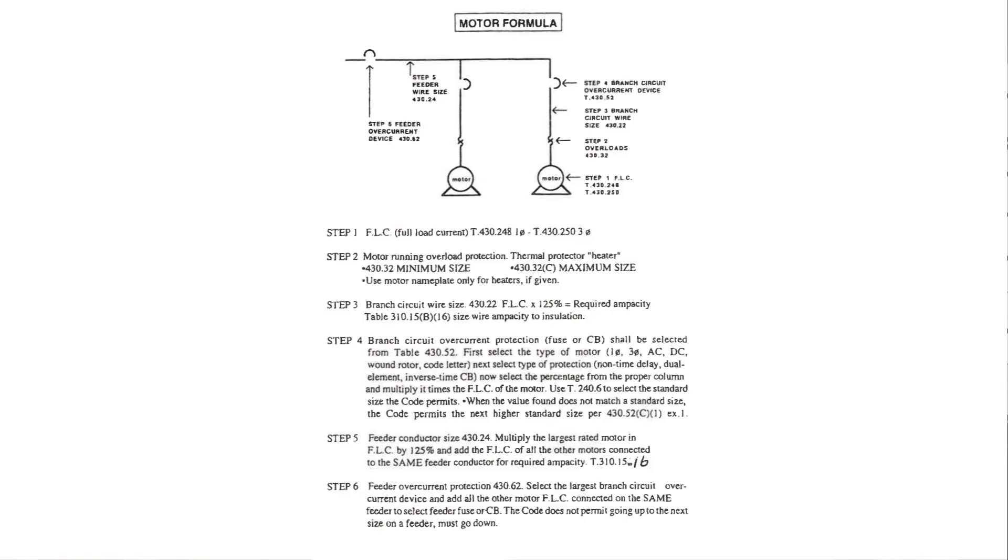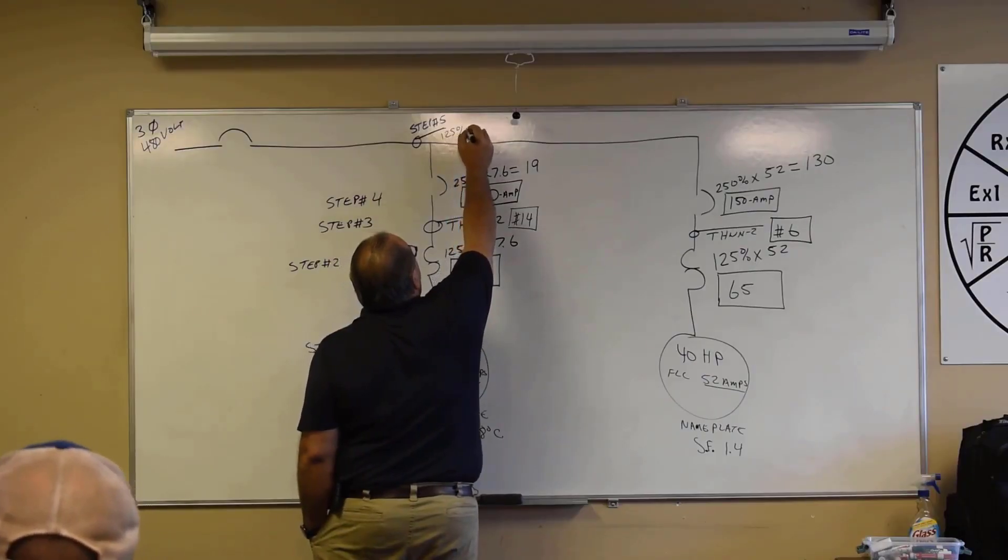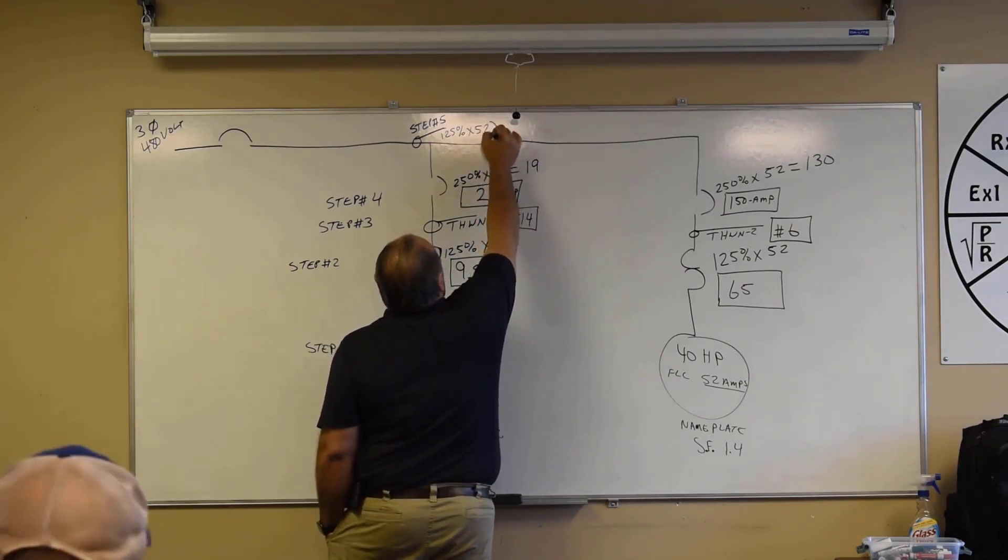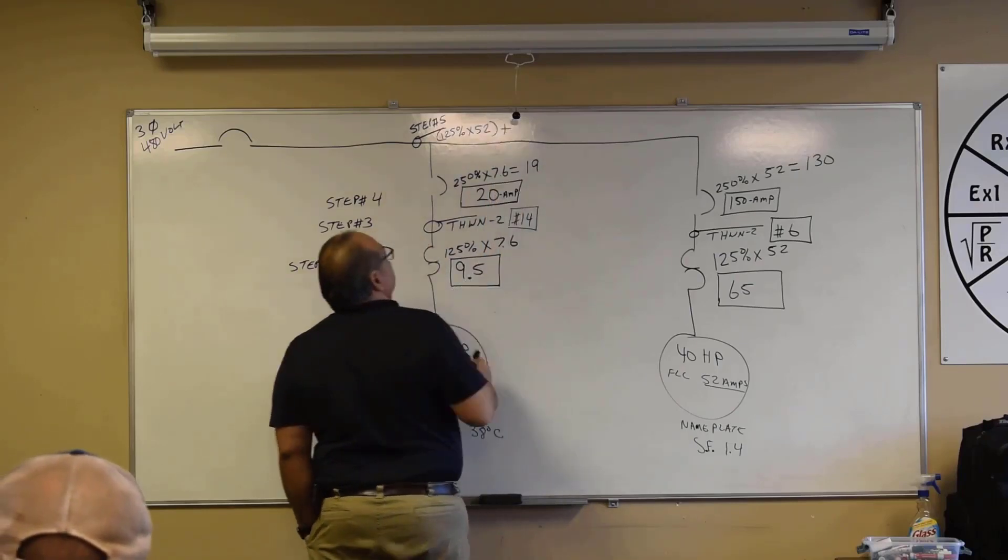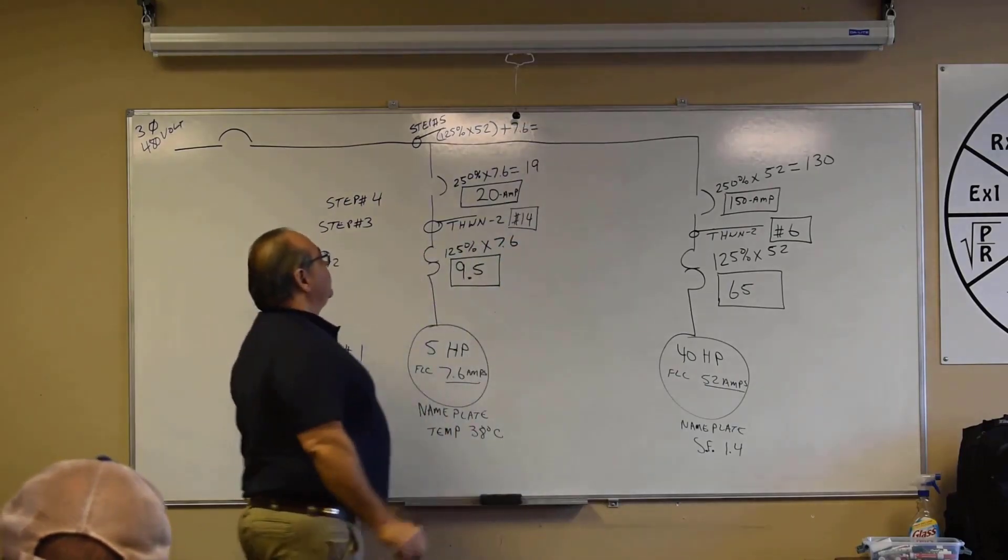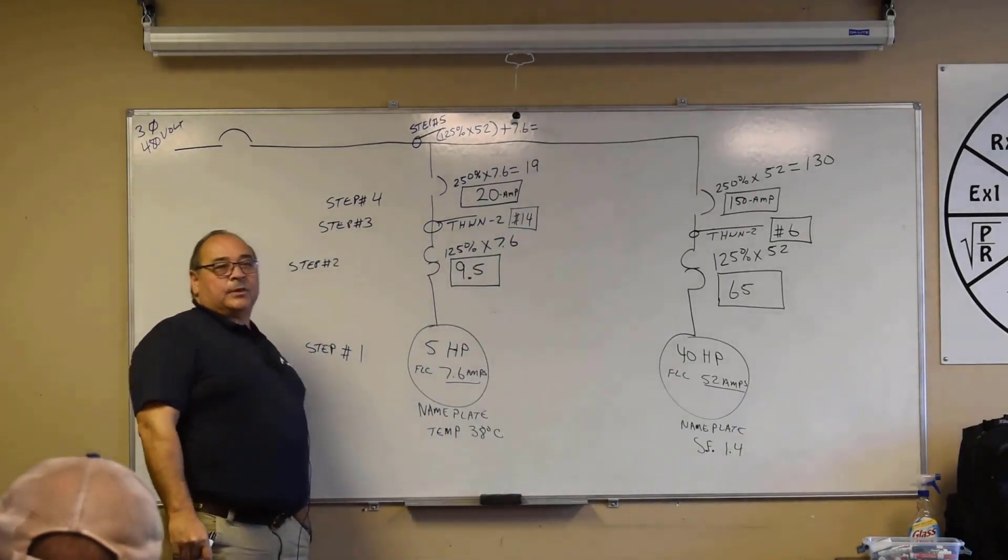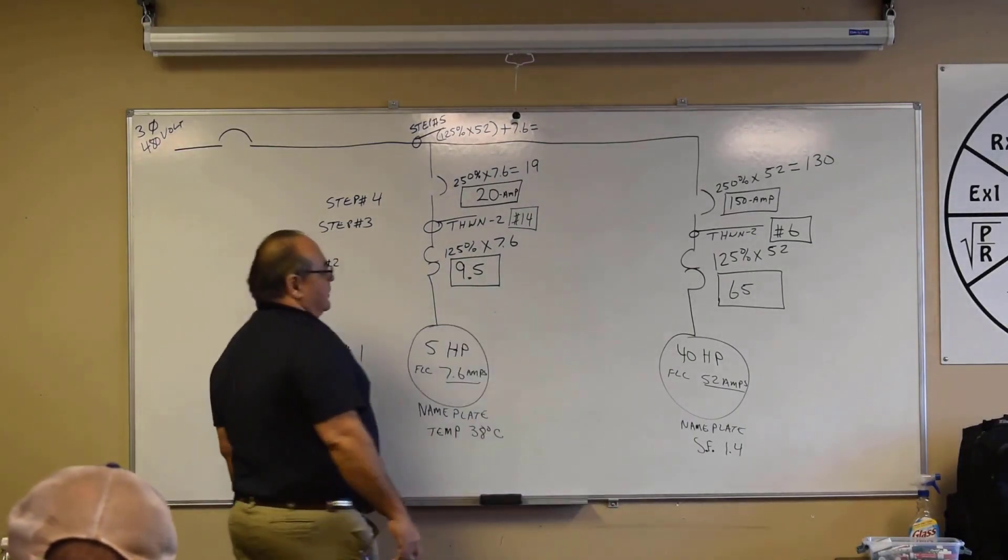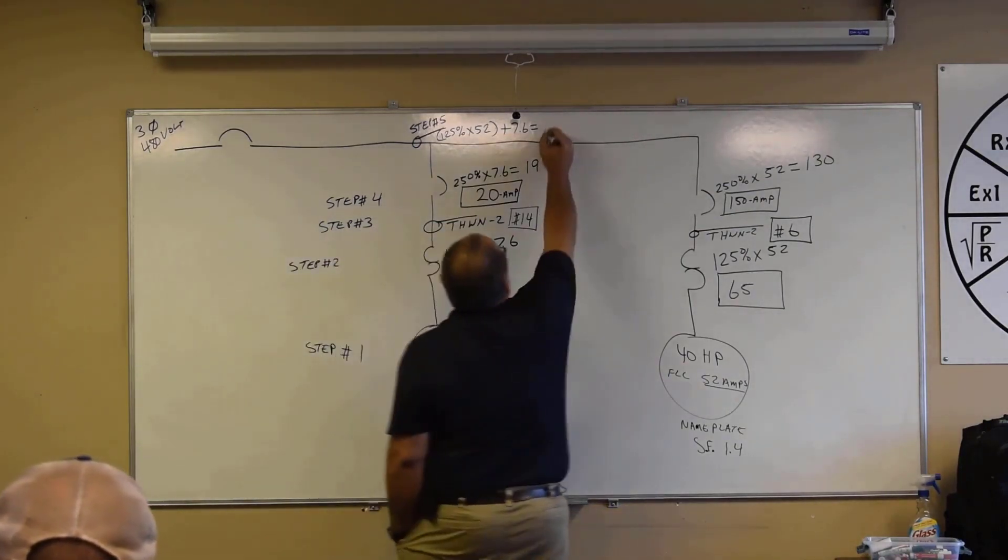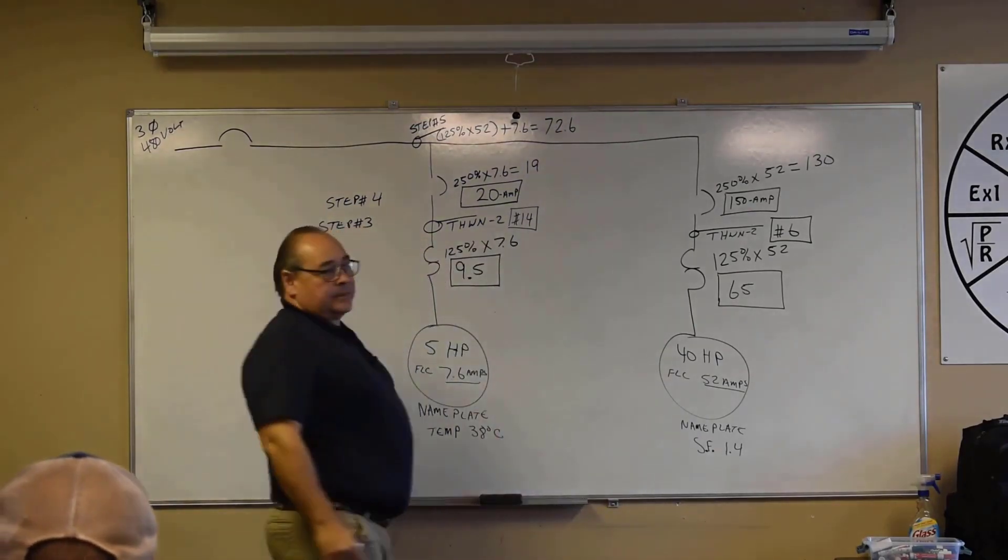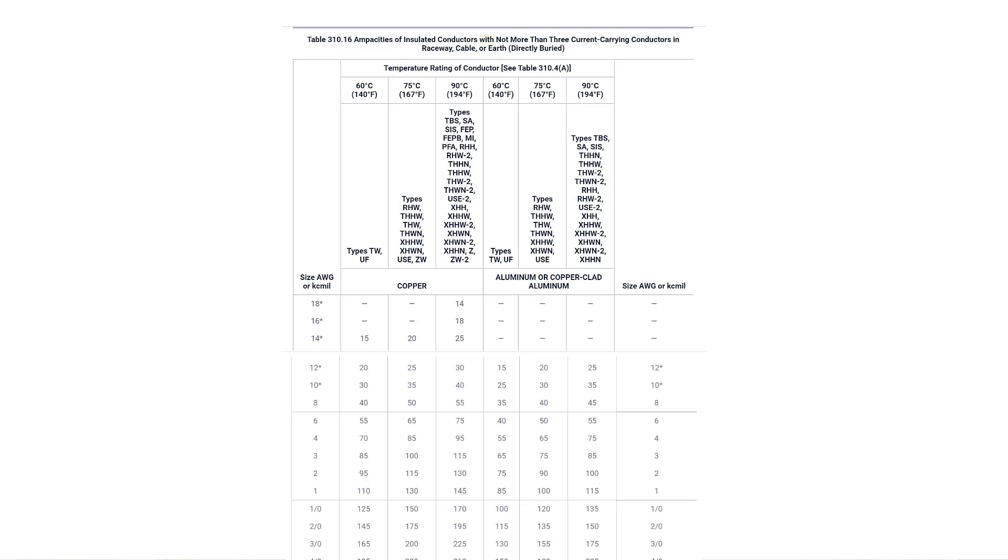So this feeder conductor size up here, step number five, right, that feeder conductor size tells us to do what? Our number five format, 125 percent of largest, which is going to be what? 52 amps, right? And then plus all others. And all others equals 7.6. So that'd be the way it looks. So 52 amps times 125 percent, what is the sum of that? We've done that once, right? 65 plus the 7.6, right? Okay, what's that equal? 72.6. Okay, so we need a wire good enough for 72.6 amps. What wire size would that be?